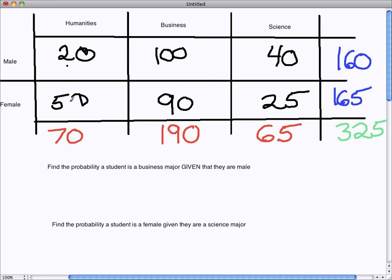So we're actually going to ignore the second row. In the first row, we're going to say, okay, business majors - there are 100 business majors that are male. We know the student has to be male, so that's our condition. There are only 160 males total. Essentially, it's like we're ignoring the females altogether because it's given they're male.